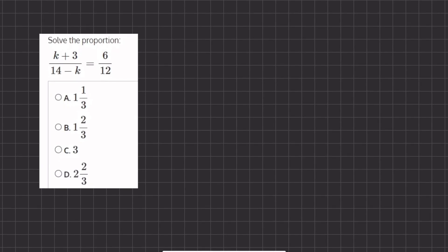In this problem, we want to solve for the proportion, and that means solving for k. When we have two fractions that are equal to one another, we can cross multiply. That means we can multiply the 12 to these terms and the 6 to these terms.